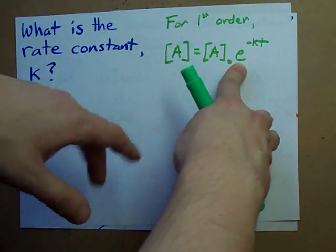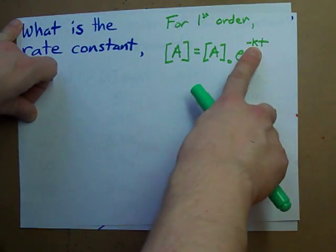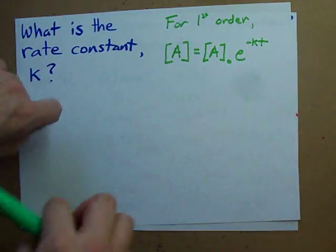E, which is a mathematical constant on your calculator. K is the rate constant for the reaction, and T is the amount of time that's gone by.